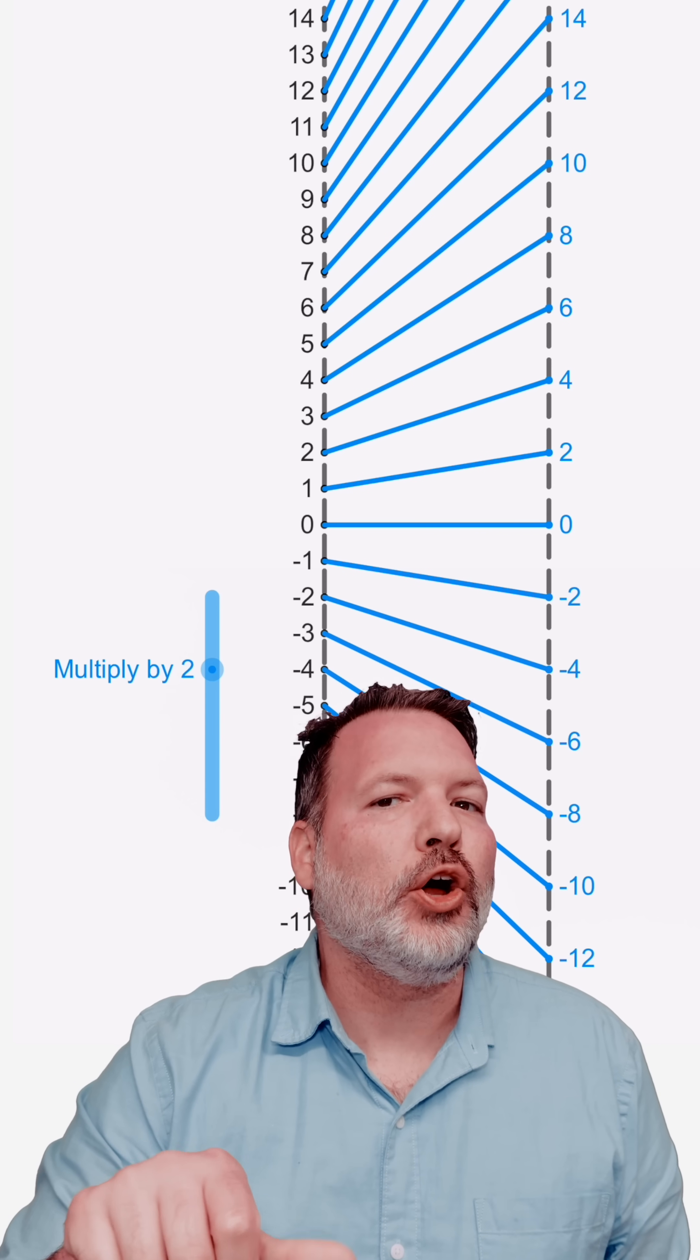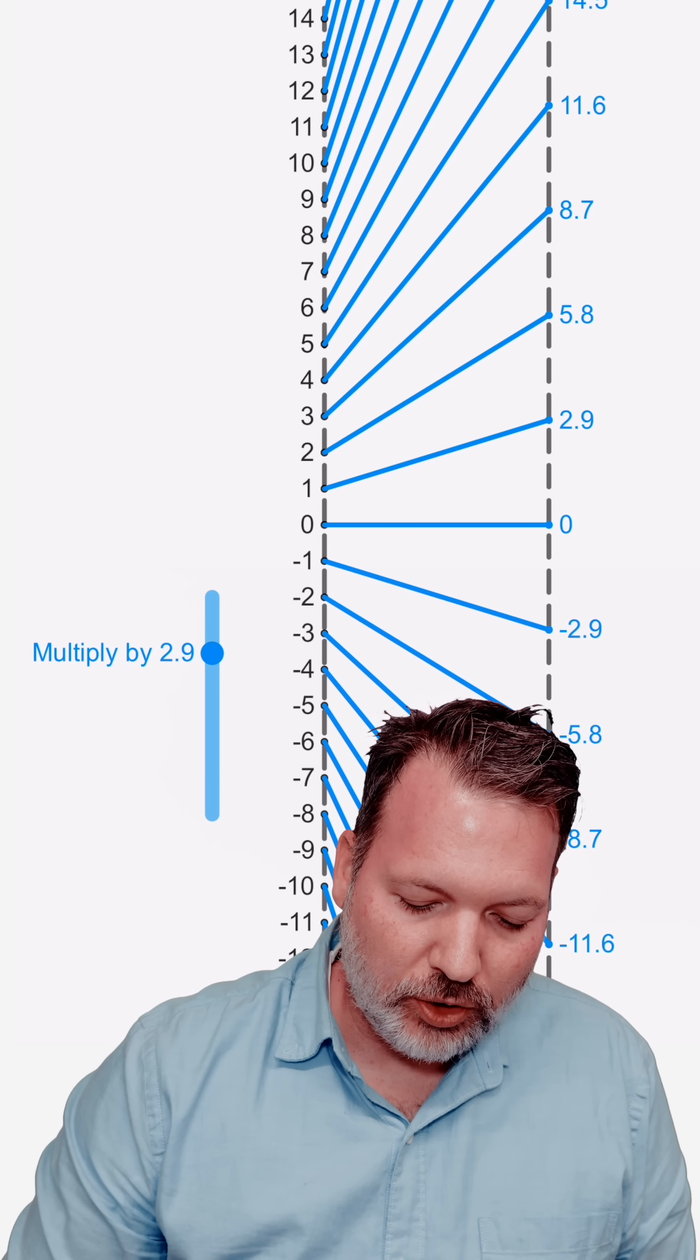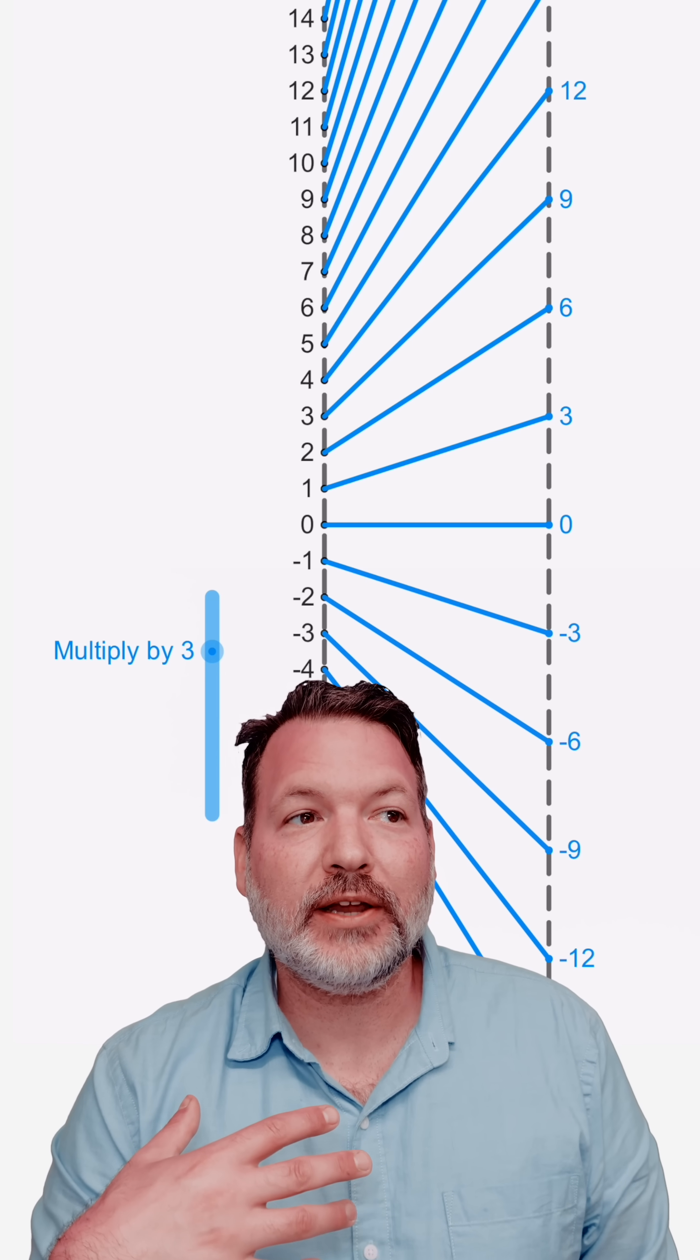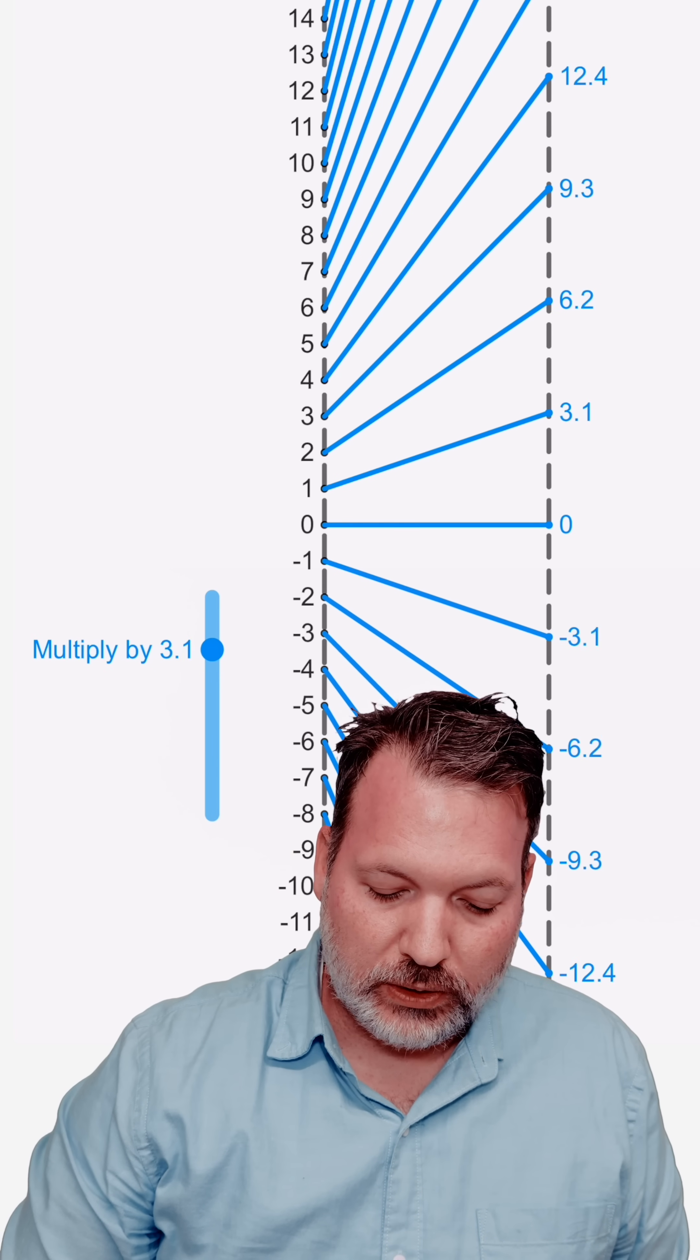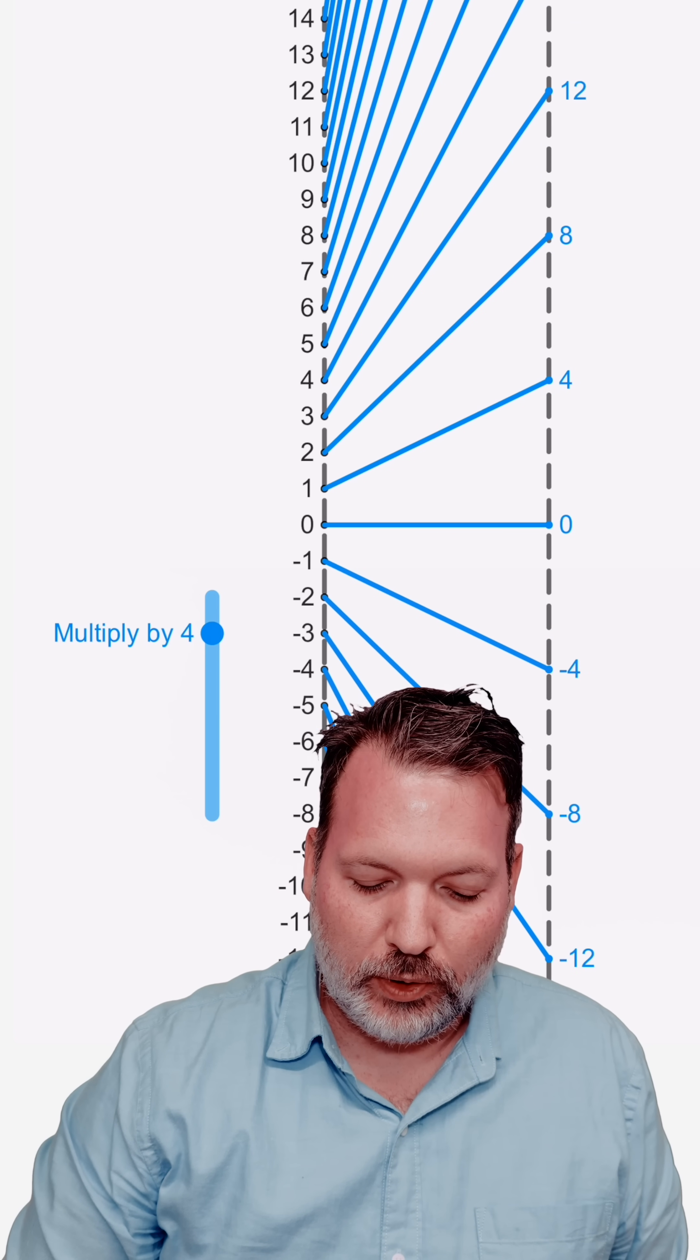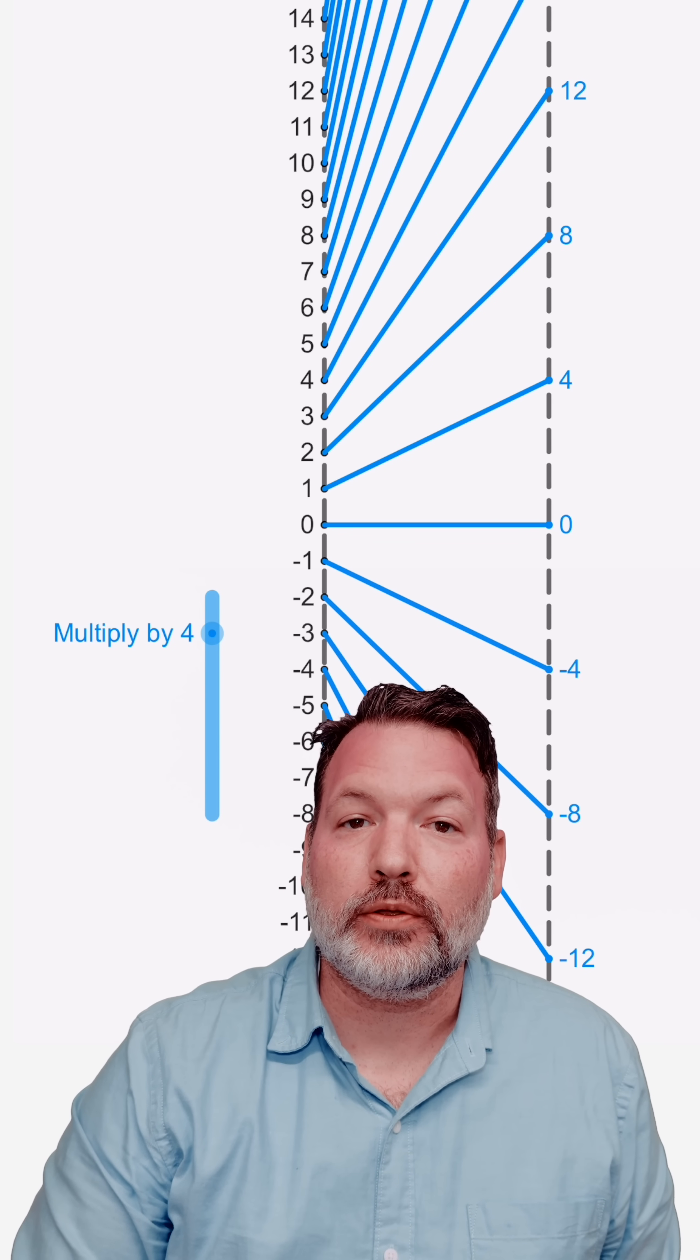Imagine turning a volume knob up or down. That's multiplication. When we turn it up, we're multiplying by greater and greater numbers. If you imagine this on a number line, it's like we're stretching that number line out. Multiplying by 3 stretches it further than multiplying by 2 would. Multiplying it by 4 stretches it even further than that.